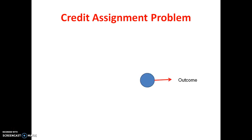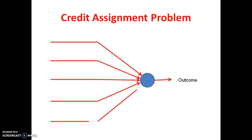Now let us see all these assignment problems with a graphical picture. This is my overall outcome, and my structure is like this: there is one internal decision, second internal decision, third, fourth, fifth — I have considered five internal decisions. O1 is the first outcome of the internal decision, O2 is the second, O3 the third, O4 the fourth, and O5 is the fifth outcome of the internal decisions.